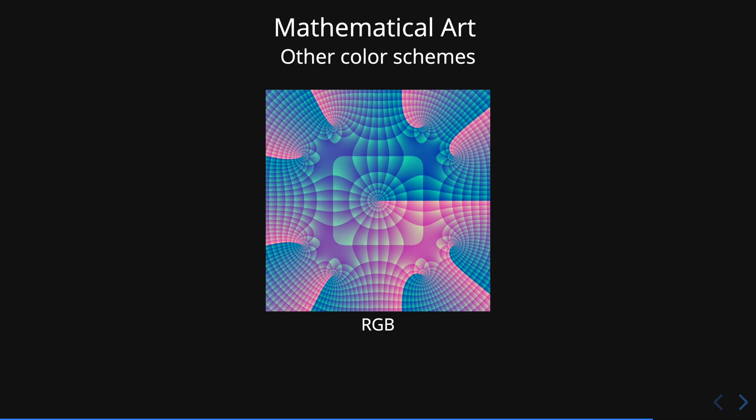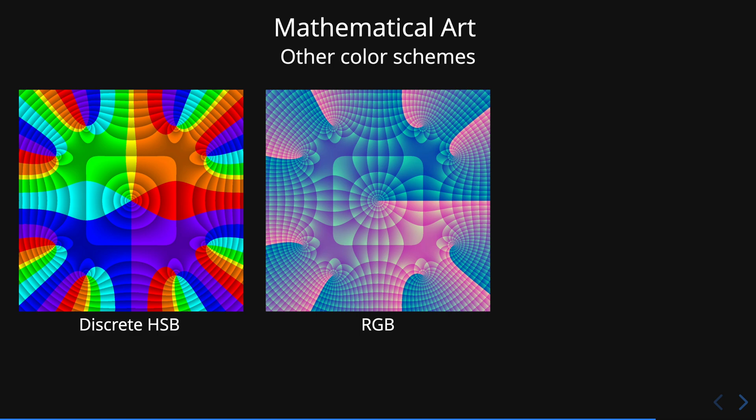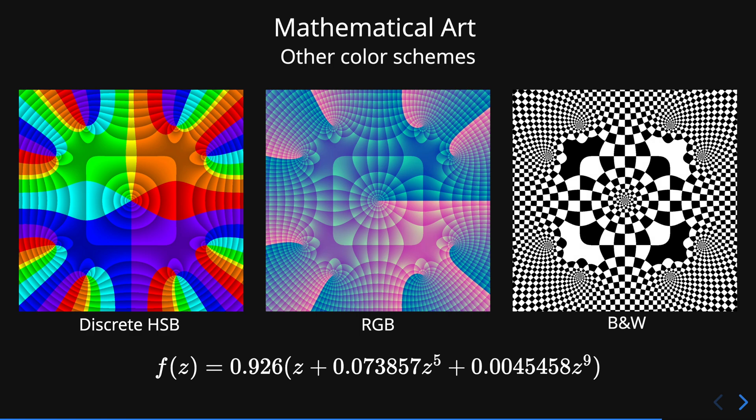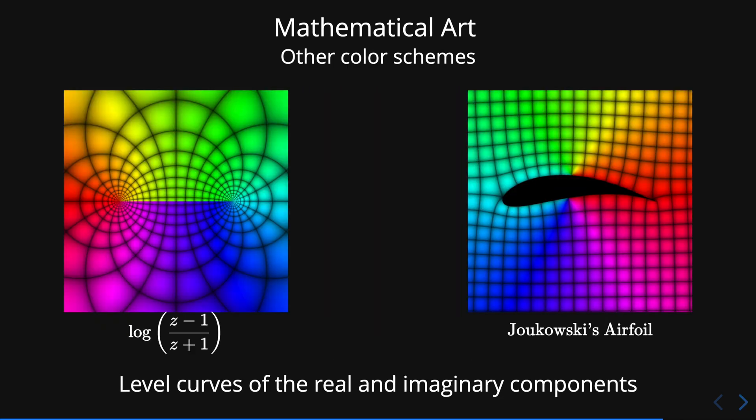And also, we can consider other color schemes. Here, RGB stands for red, green, and blue, or we can use a discrete version of a HSB scheme, or a black and white color scheme.